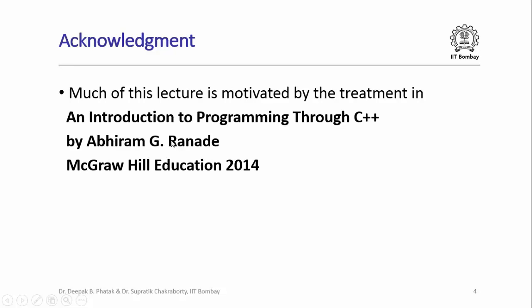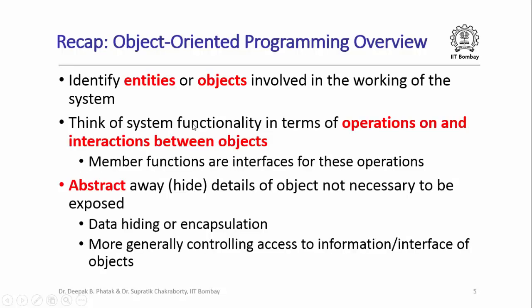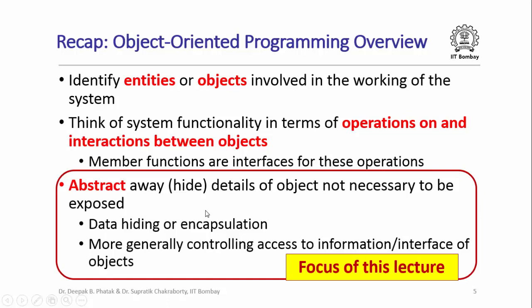Much of this lecture is motivated by the treatment in the book An Introduction to Programming through C++ by Abhiramji Ranadeh, published by McGraw Hill Education in 2014. Recall that when we try to do object oriented programming, we first try to identify entities or objects involved in the working of the system we are trying to program. Then we think of the system functionality in terms of operations on and interactions between these objects, and member functions are basically the interfaces for these operations. Something we had seen but not studied in detail is abstracting away or hiding details of objects not necessary to be exposed. This is also called data hiding or encapsulation, and more generally it relates to controlling access to information and interfaces present in objects, and this is going to be the focus of this lecture.